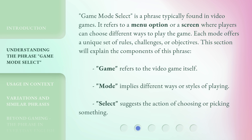Game Mode Select is a phrase typically found in video games. It refers to a menu option or a screen where players can choose different ways to play the game. Each mode offers a unique set of rules, challenges, or objectives. Game refers to the video game itself. Mode implies different ways or styles of playing. Select suggests the action of choosing or picking something.